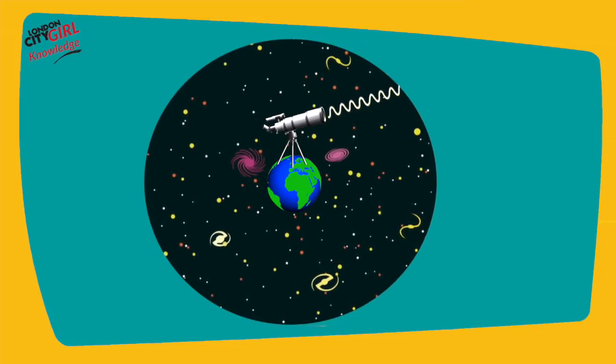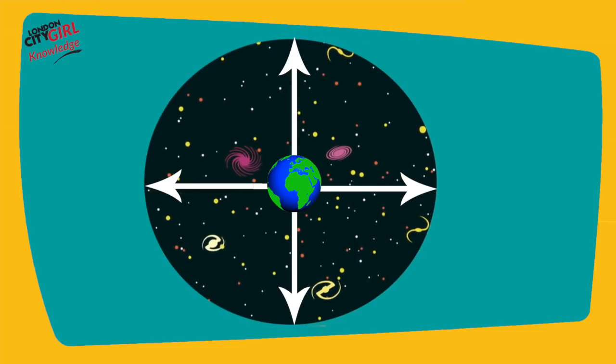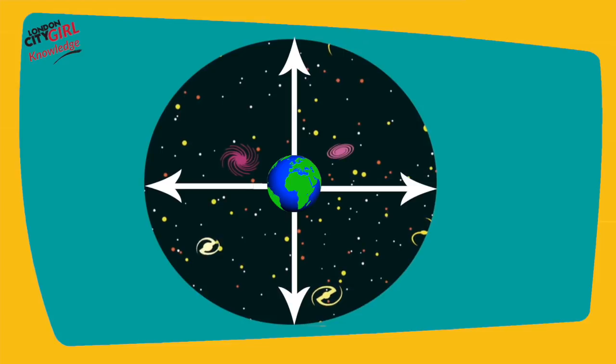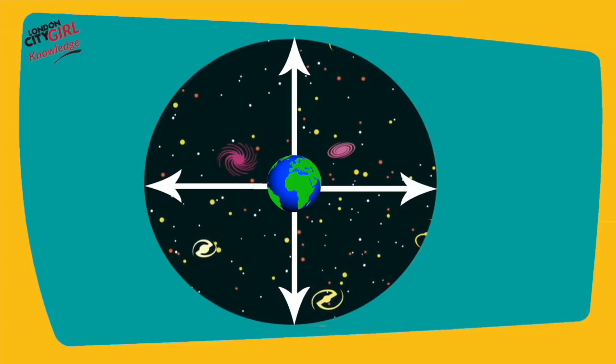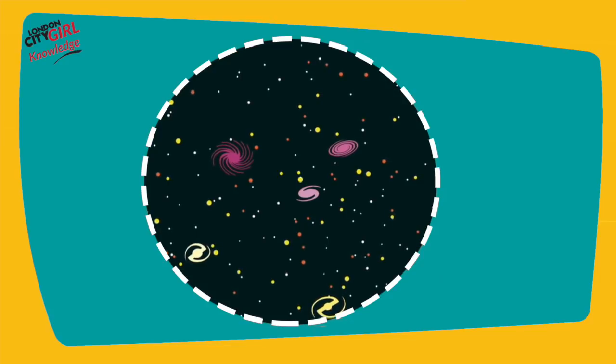Assuming that the universe is the same in all directions, the distance to the edge of the observable universe is the same in every direction, so the shape of our observable universe is a spherical ball with the observer at its centre.